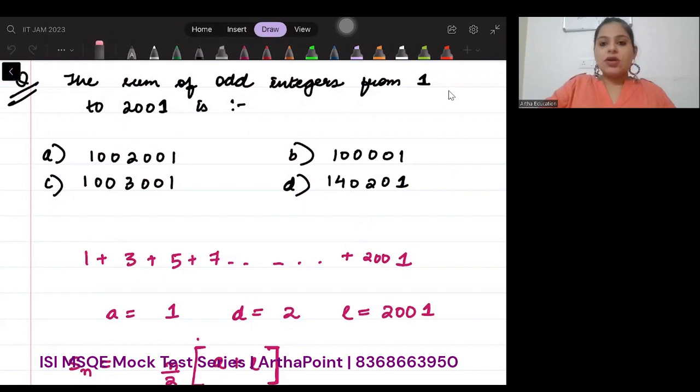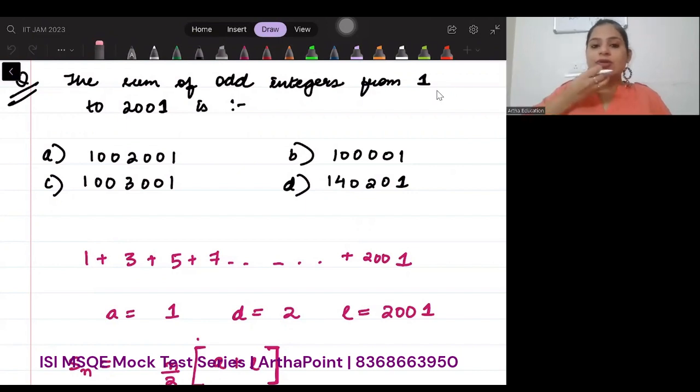The sum of odd integers from 1 to 2001 is - this is a pretty simple question. Let us try to see how we will go ahead and solve this question.